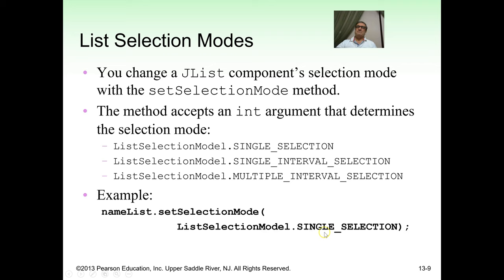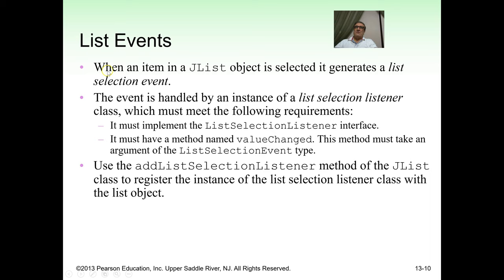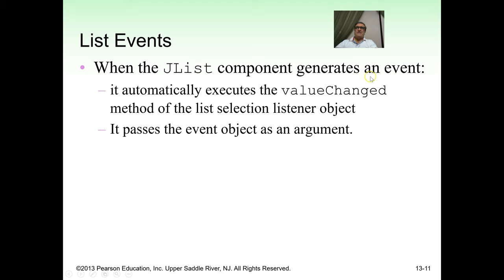When an item in a JList object is selected, it generates a ListSelectionEvent. The event is handled by an instance of a ListSelectionListener class. Requirements: it must implement the ListSelectionListener interface, it must have a method named valueChanged that takes a ListSelectionEvent argument, and you use the addListSelectionListener method to register it with the list object. When the JList generates an event, it automatically executes the valueChanged method.